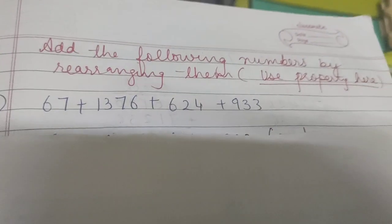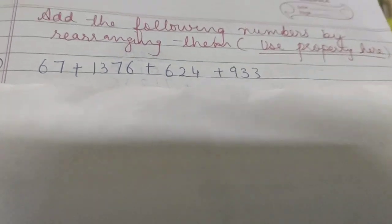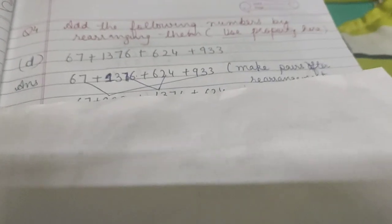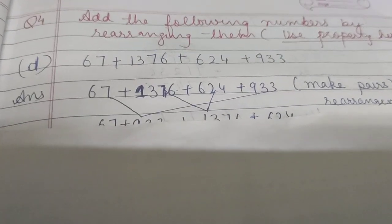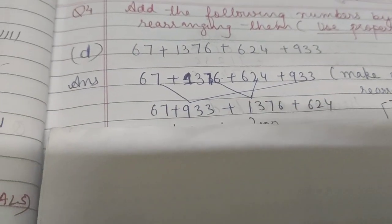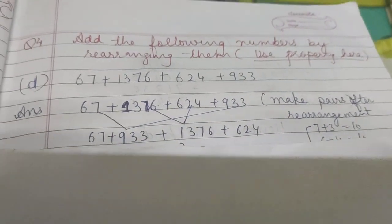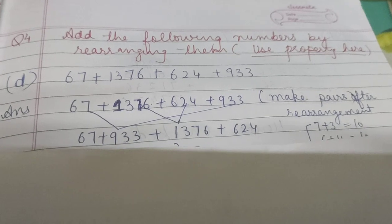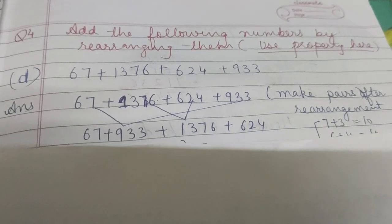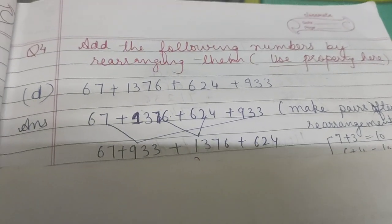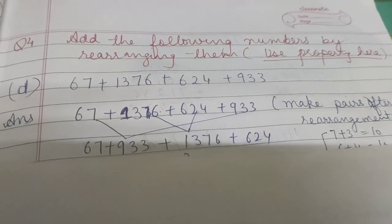Now add the following numbers by rearranging them using the property. Look at part D: 67 plus 1376 plus 624 plus 933. Here we make the pairing — how we make the pairing is by choosing two numbers out of four whose unit digits sum to 10.